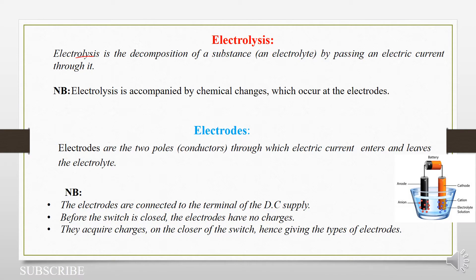Electrolysis, as we had seen in our previous video, is the decomposition or breakdown of a substance whenever we pass electricity through it. Electrolysis comes from the word lysis — breaking down of an electrolyte. So it's the decomposition of a substance which is an electrolyte, because it should be able to conduct electricity by passing electric current through it, and so is accompanied by chemical changes. For something to dissociate or ionize, it must be a chemical change because we are changing the chemical composition of that substance, and usually these chemical changes occur at the electrodes.